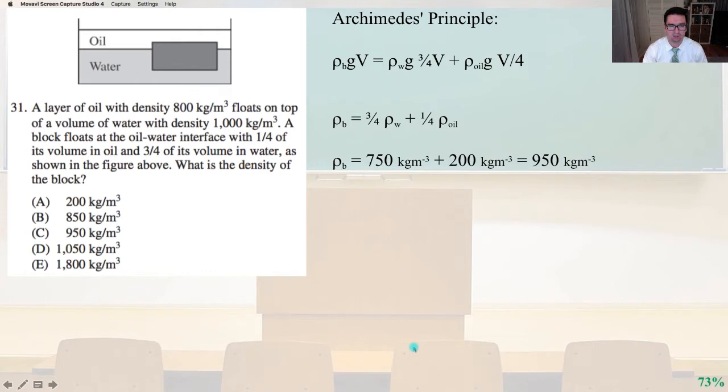What is the density of the block? We're going to apply Archimedes Principle and say rho block times g times volume equals rho water g three-quarters volume plus rho oil g times one-quarter volume. So the density of the block equals three-quarters times the density of water plus one-quarter times the density of oil. So the density of the block equals 750 kg per cubic meter plus 200 kg per cubic meter, and that is going to equal answer C.